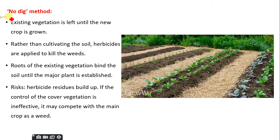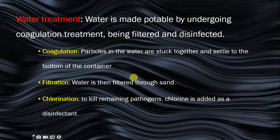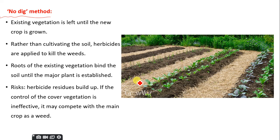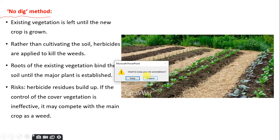You can also use the no-dig method. You don't dig the soil at all — all you do is add manure and plant on top of it, leaving the soil the way it is so it remains compacted, thereby reducing soil erosion. The major concept of this video is to differentiate between terracing and contour plowing as methods of managing soil erosion.